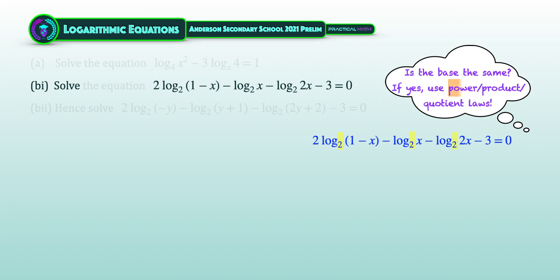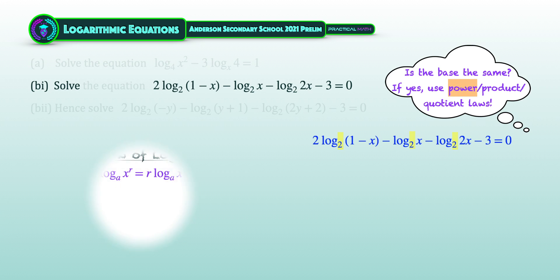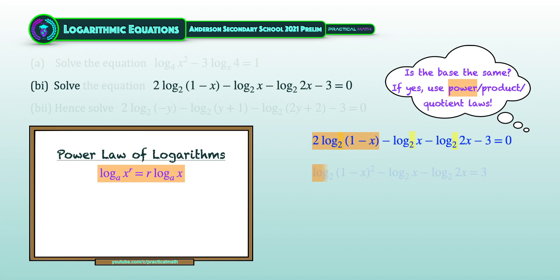This means we can now apply the power law of logarithms, where the product of r can be shifted to the exponent of x. Thus, our product of 2 in the first logarithmic term can be shifted to the exponent of (1 minus x).